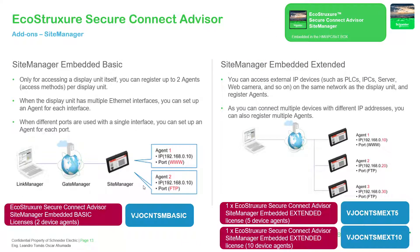The basic license will allow you only to connect to the HMI and it is only local to that HMI. You can only change the port — so with the basic you can only get access to the HMI. That's all. You can access it to download from the HMI, access the FTP, or the web view or web gate. That is for the Secure Connect Devices embedded basic license for the site manager.